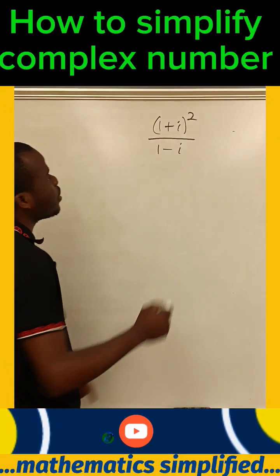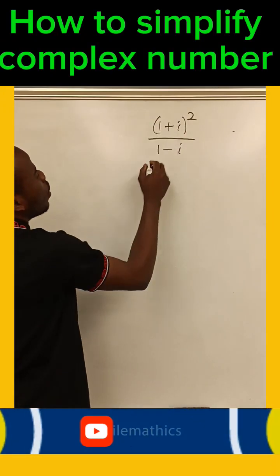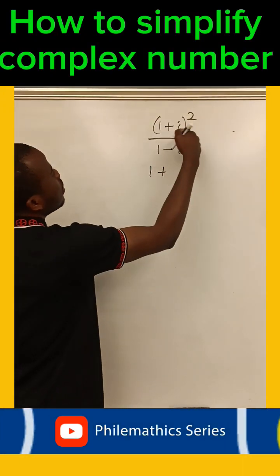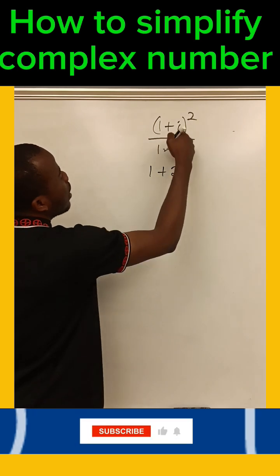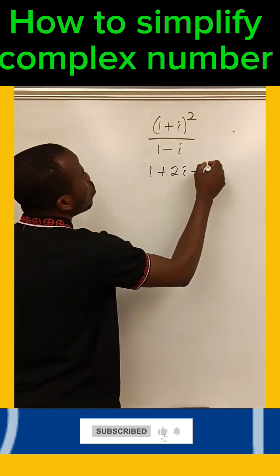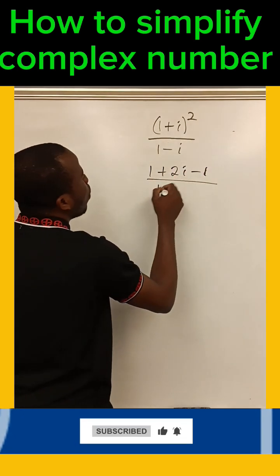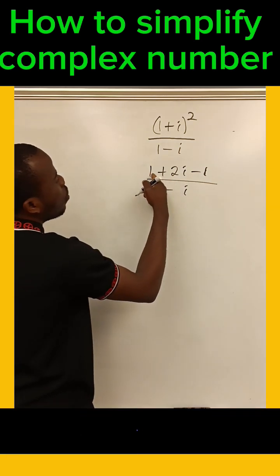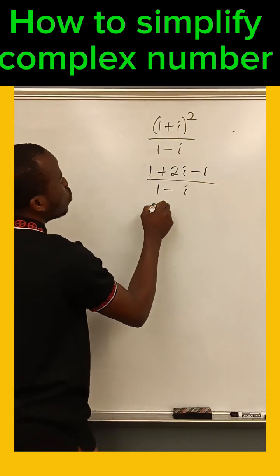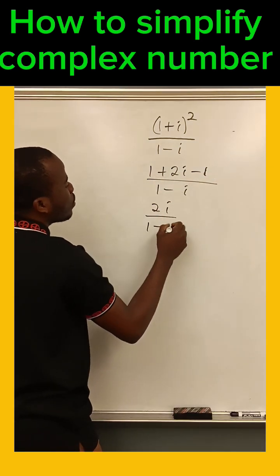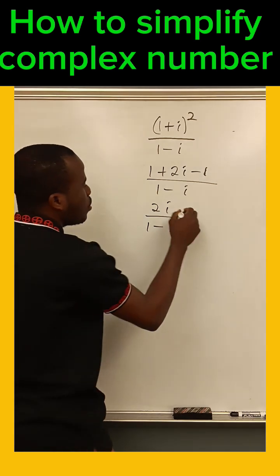Let's simplify this. If we take the square of this, we'll have one squared is one, two times this times this is 2i, and i squared is minus one. Over one minus i. This gives us one minus one is zero, so this simplifies to 2i over one minus i. We'll take the conjugate.